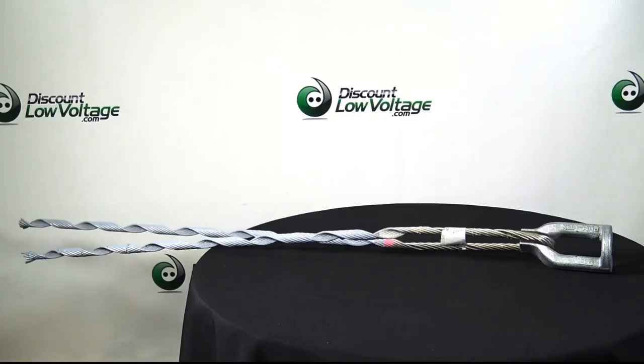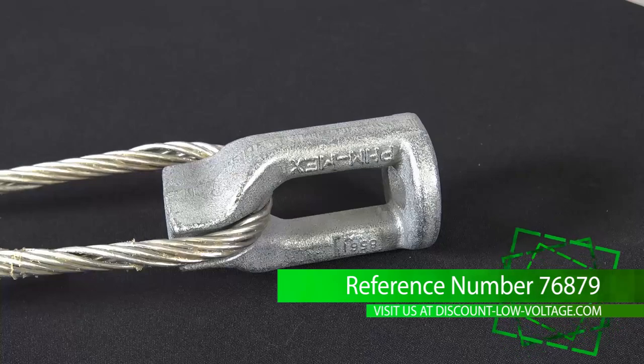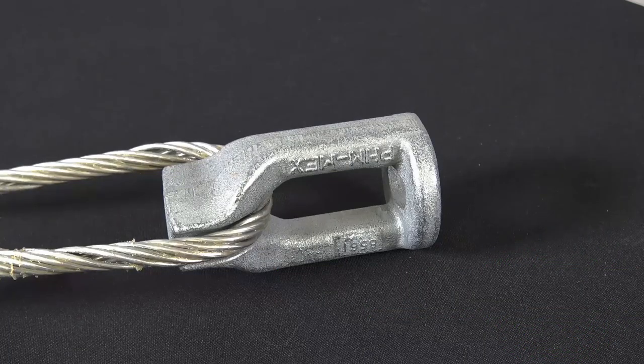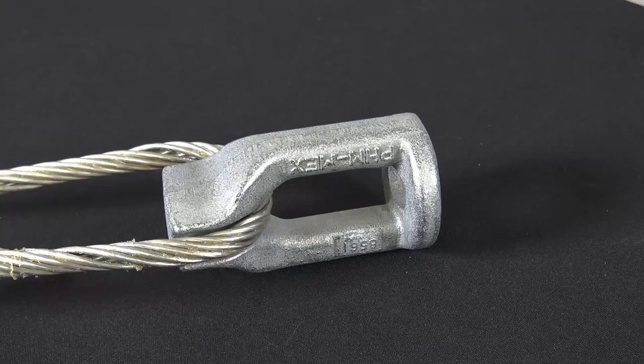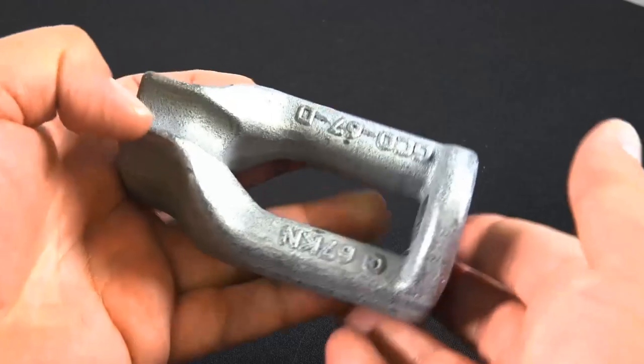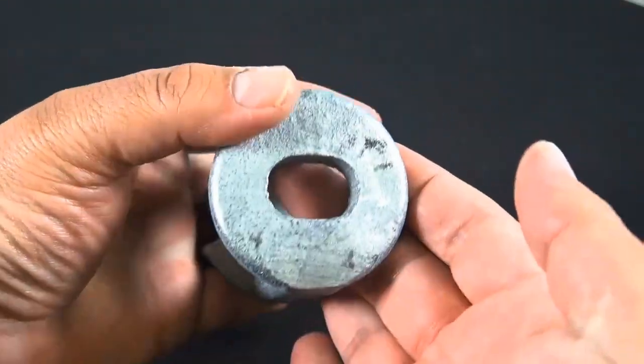Okay, here's a quick look at the mini dead end with the thimble eye. This is reference number 76879. Easy and quick installation, no special tools required. There's the thimble eye, there's a good look at it right there. As you can tell, it's curved and it's designed for the dead end to wrap around it properly.